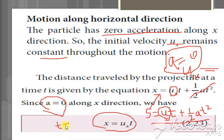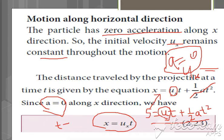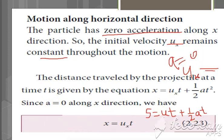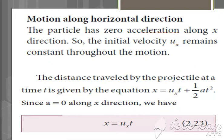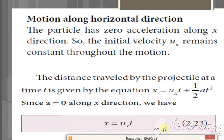So t = x/uₓ is an important equation we will use in the next steps. For the horizontal direction: acceleration is zero and the velocity uₓ remains the same. For the vertical direction it is the opposite: the initial vertical velocity uy is zero and the acceleration equals g.